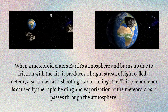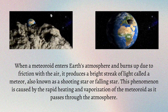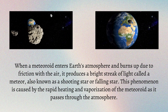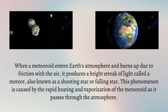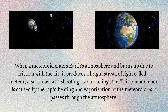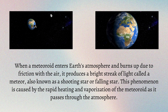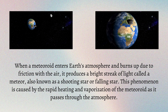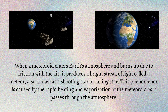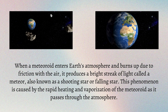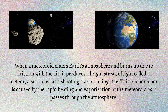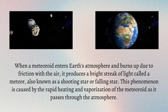When a meteoroid enters Earth's atmosphere and burns up due to friction with the air, it produces a bright streak of light called a meteor, also known as a shooting star or falling star. This phenomenon is caused by the rapid heating and vaporization of the meteoroid as it passes through the atmosphere.